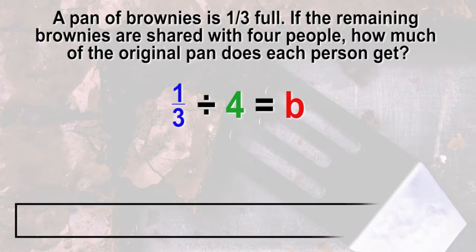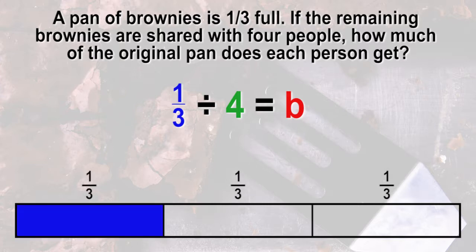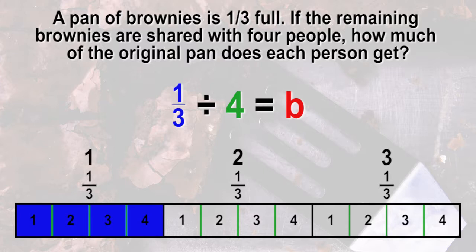Let's draw a fraction strip or bar model. The bar is the whole, and we'll divide it into thirds. One-third of the pan is colored blue. We need to share with four people, so we'll divide each third into fourths, so we will have even pieces. Since there are three-thirds, and each has four sections, then three times four of those parts make up a whole.